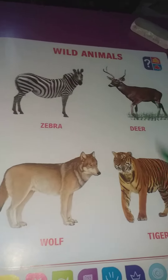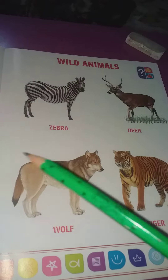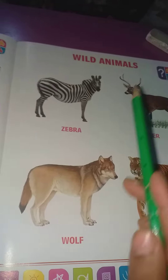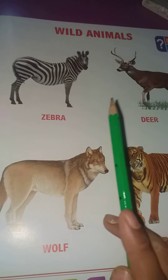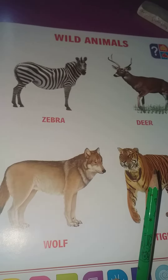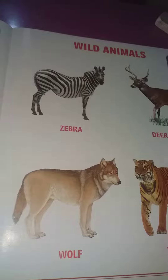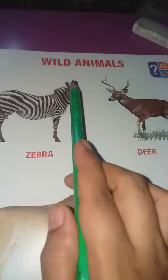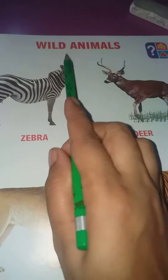Today's topic is wild animals. Today I will teach you wild animals. Repeat with me, beta. You have to repeat with me. You have to write. You have to learn. You have to say three times with your ma'am. Today we learn wild animals.